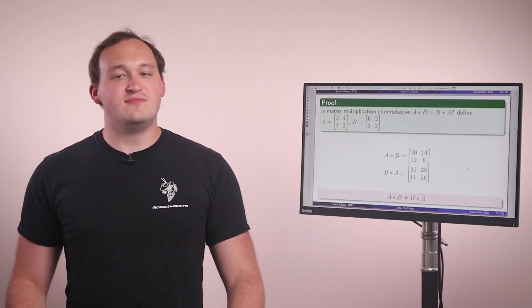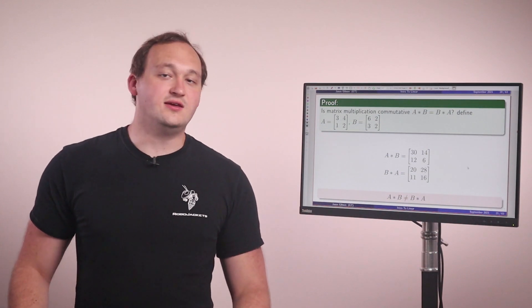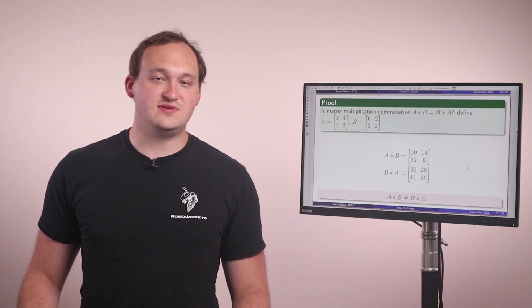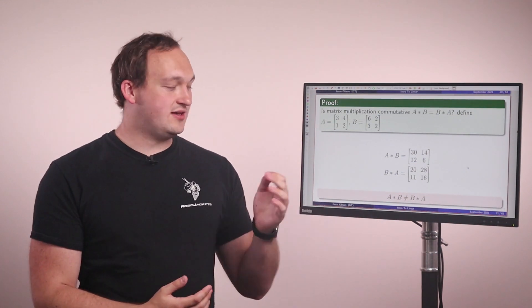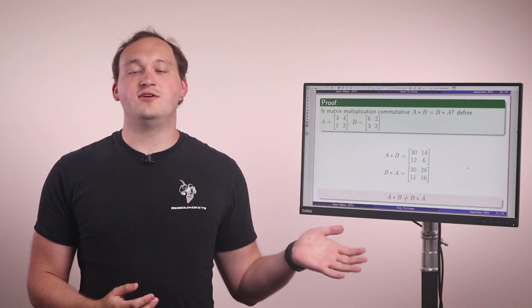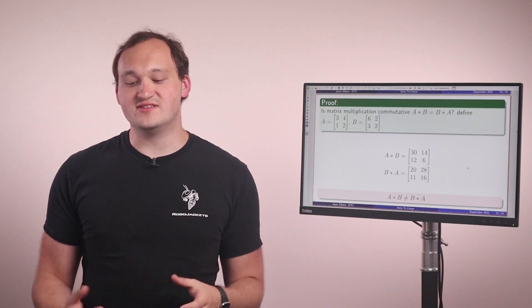The property we're going to look at is, is matrix multiplication commutative, i.e. does A times B equals B times A. And if we take two matrices, A and B, and we multiply A times B and B times A, we see we get different values. Therefore matrix multiplication is not commutative.